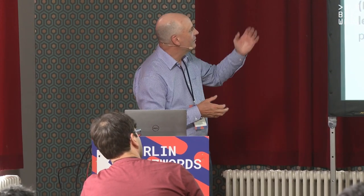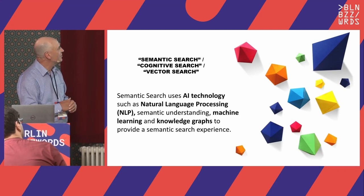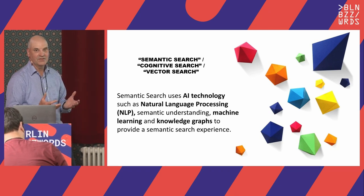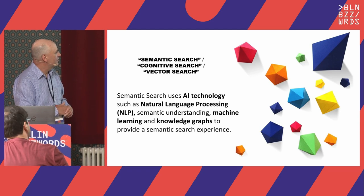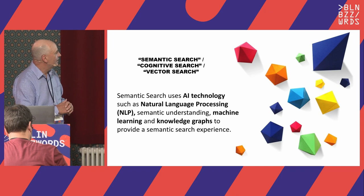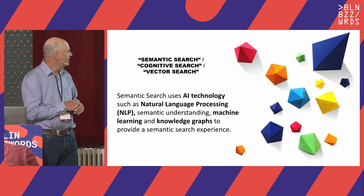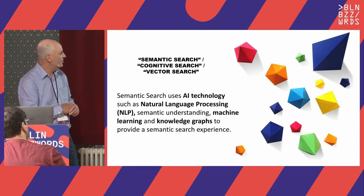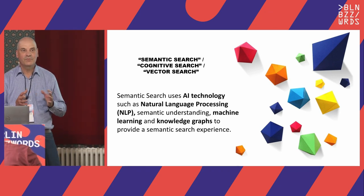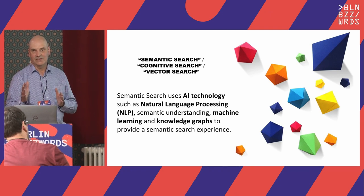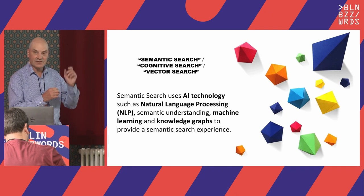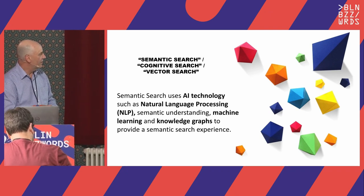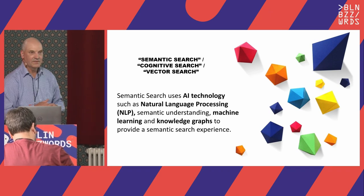The ability to answer questions with a search engine has gone by a number of different names — you may have heard of semantic search, cognitive search, and more recently vector search. For this presentation I'll use the term semantic search. They all use natural language processing capabilities to enable semantic understanding, elements of machine learning, and potentially knowledge graphs. Google uses a knowledge graph with billions of nodes, and pulls from it when it has a definitive answer rather than using a search query.